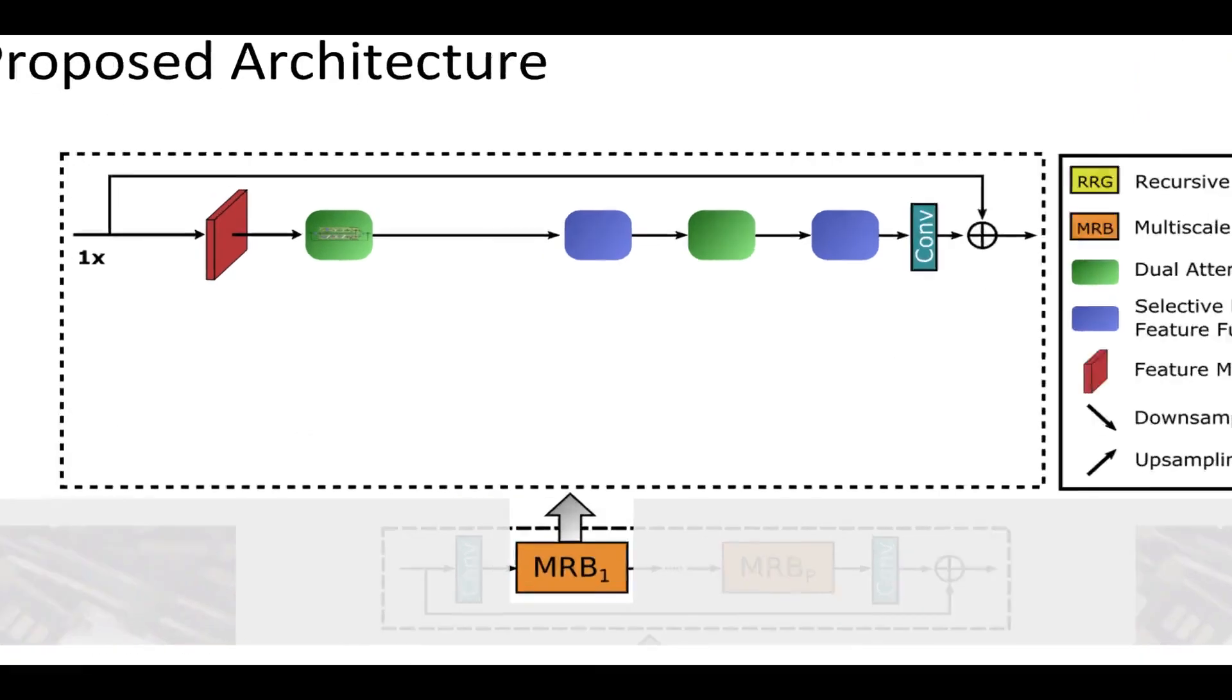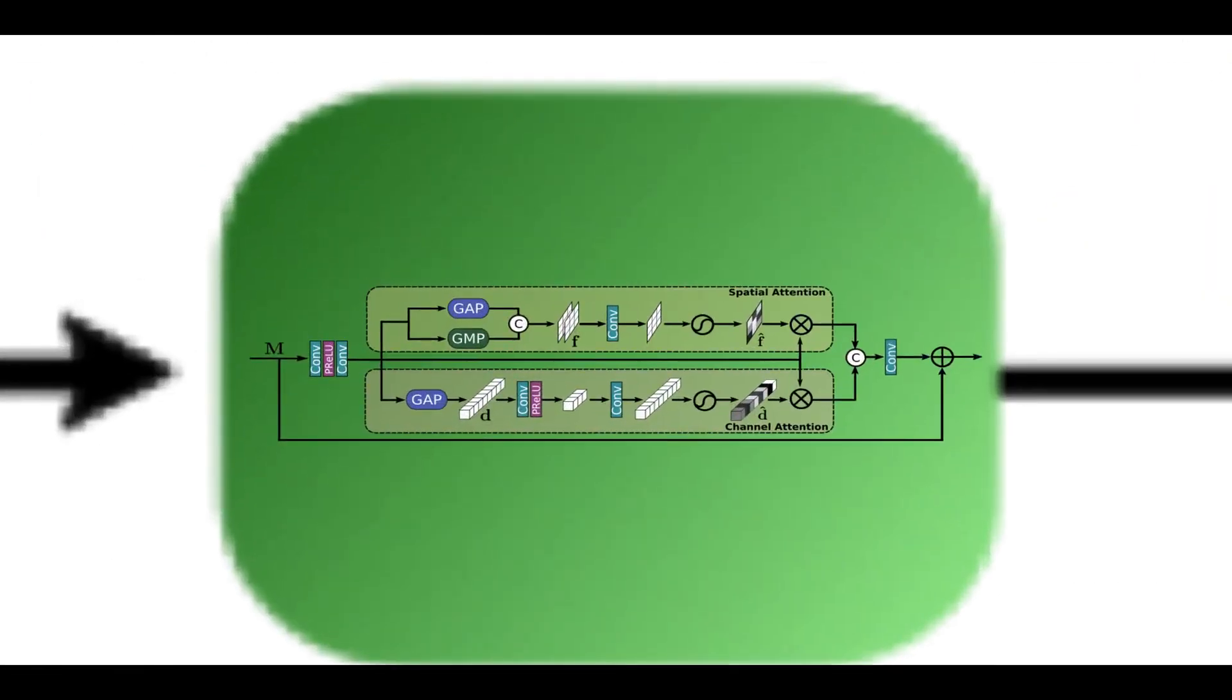The green block represents the dual attention unit which suppresses less useful features and only allows more informative ones to pass further. This feature recalibration is achieved by using channel attention and spatial attention mechanisms.